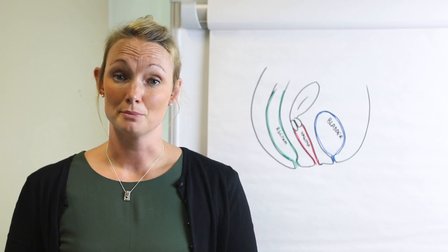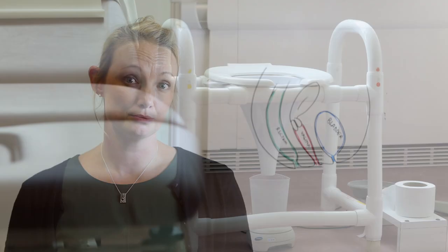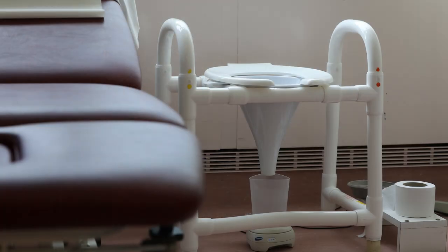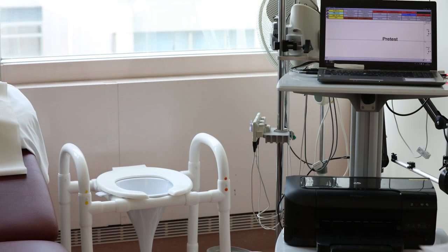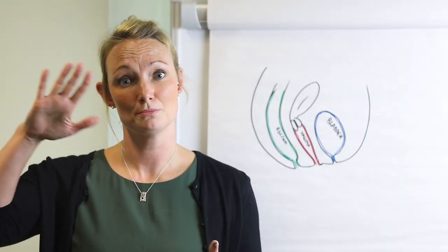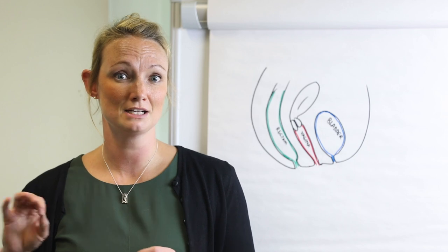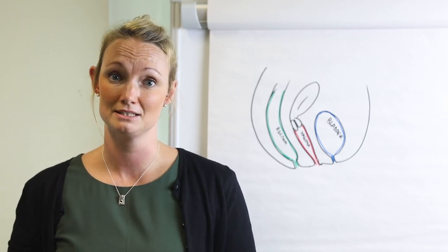The first part of the test is uroflowmetry, which is where the patient voids into a special commode which measures volume and flow rate and the computer generates a graph. If it is normal, there should be a smooth bell-shaped curve with a maximum flow rate Qmax of over 15 mils per second.